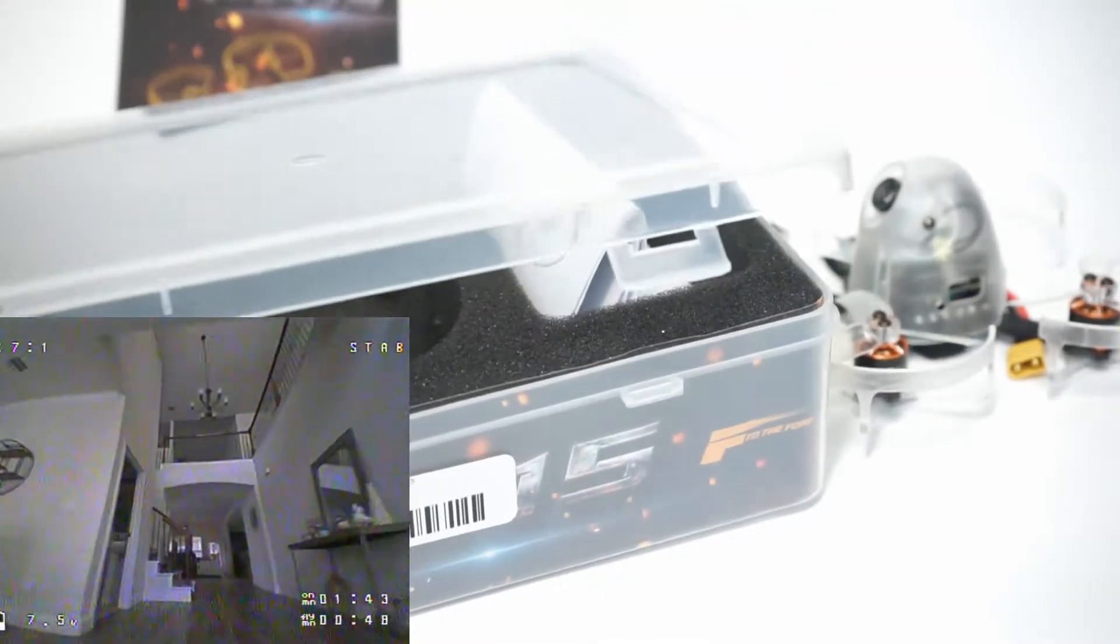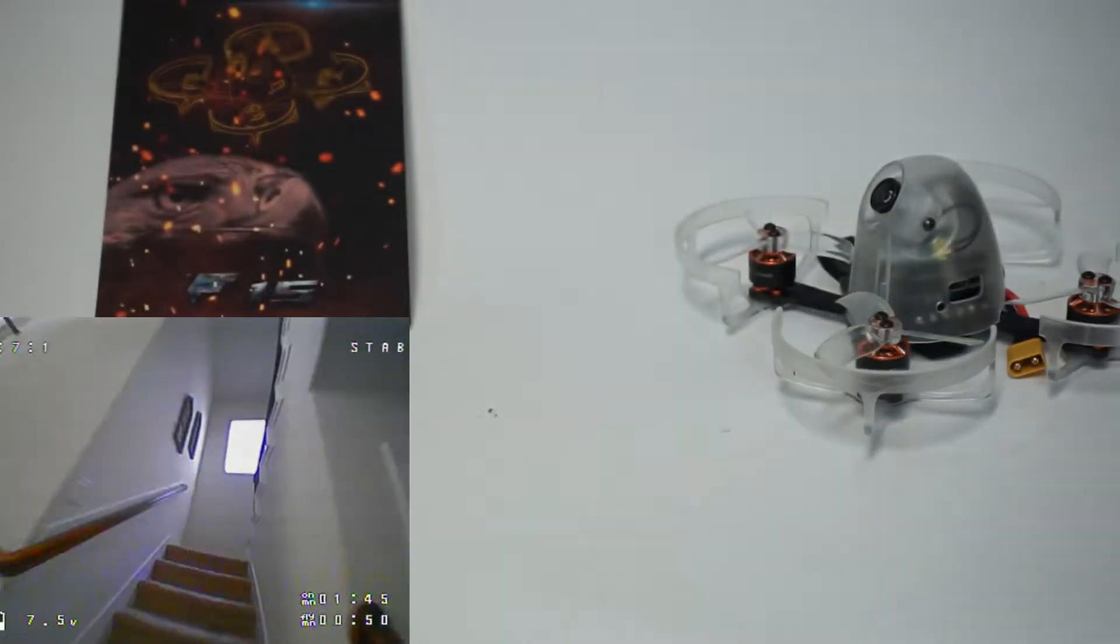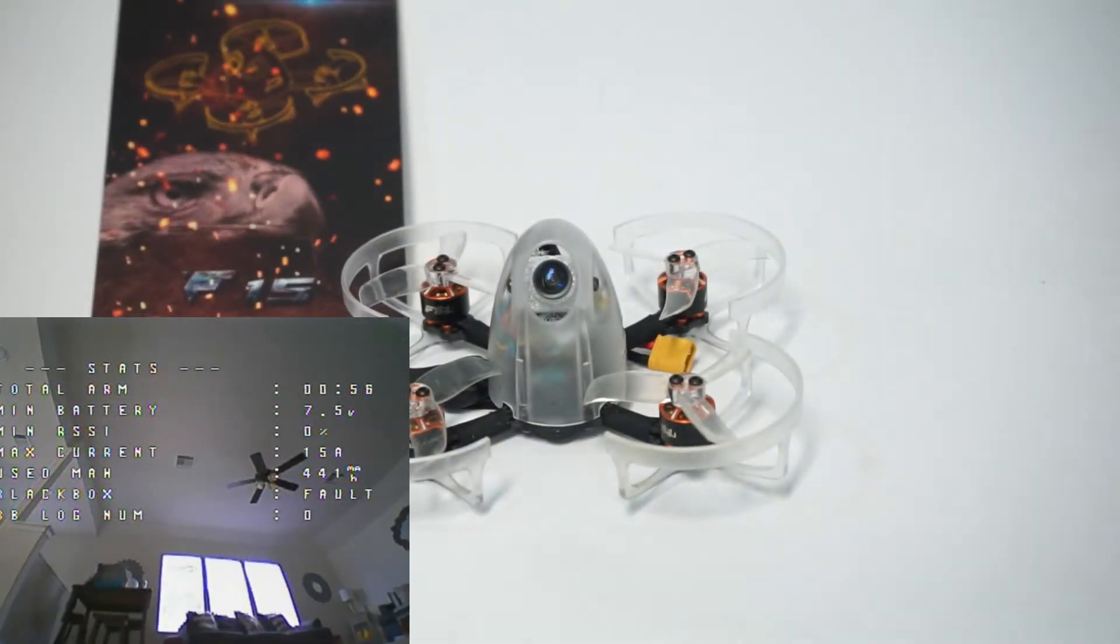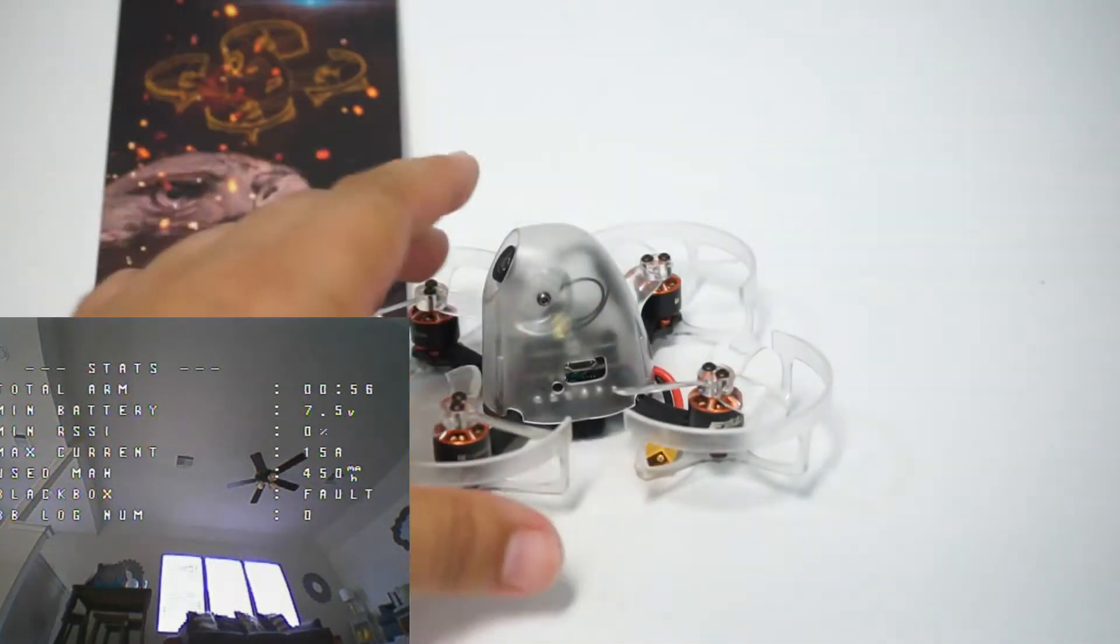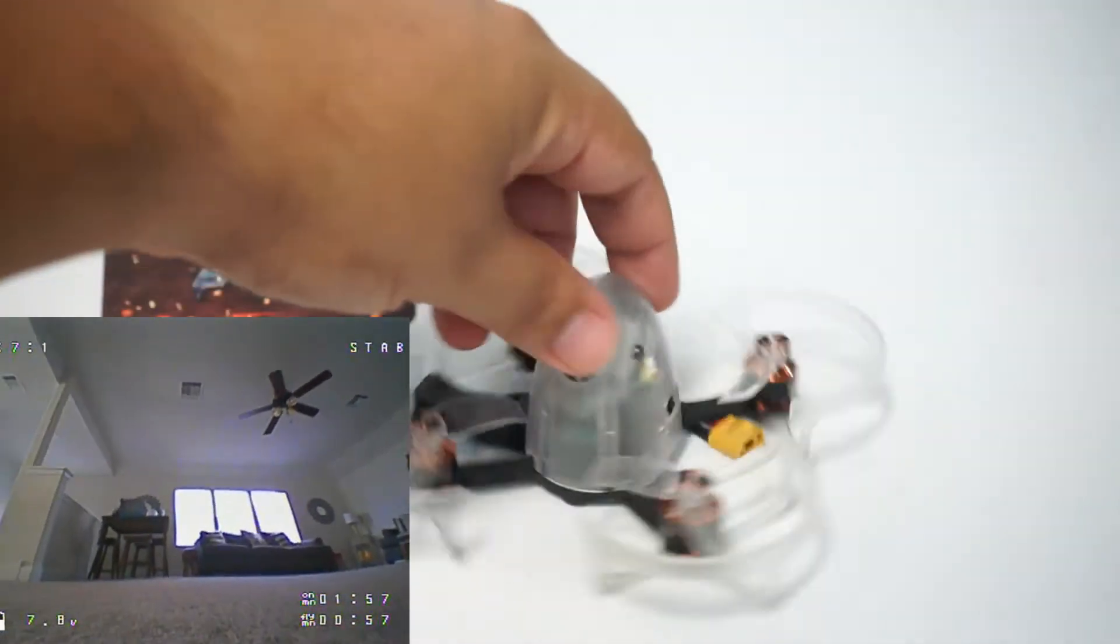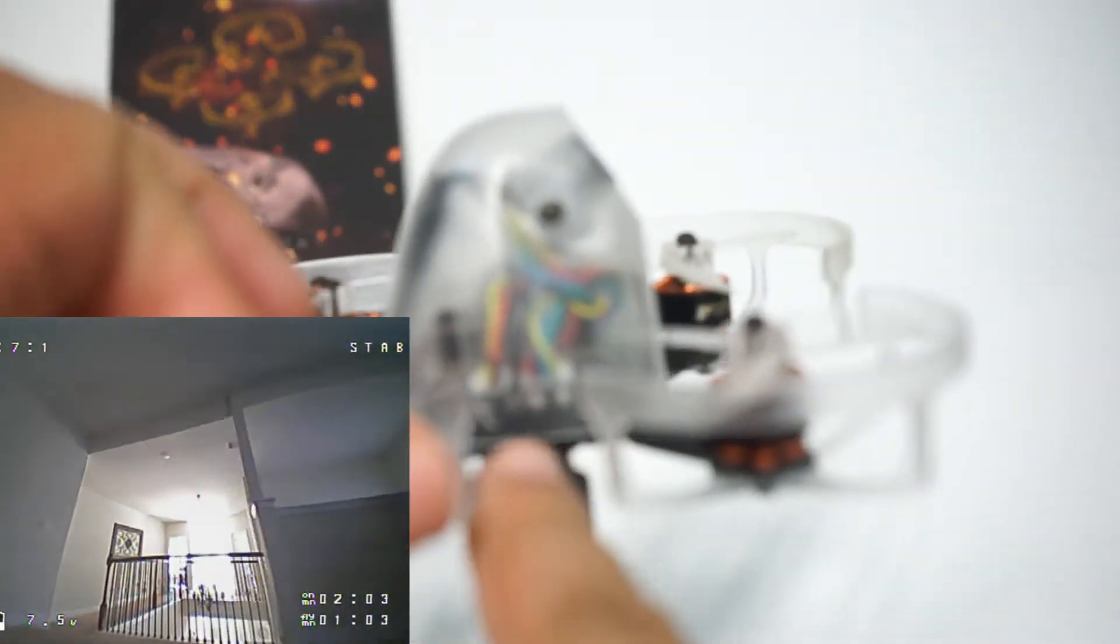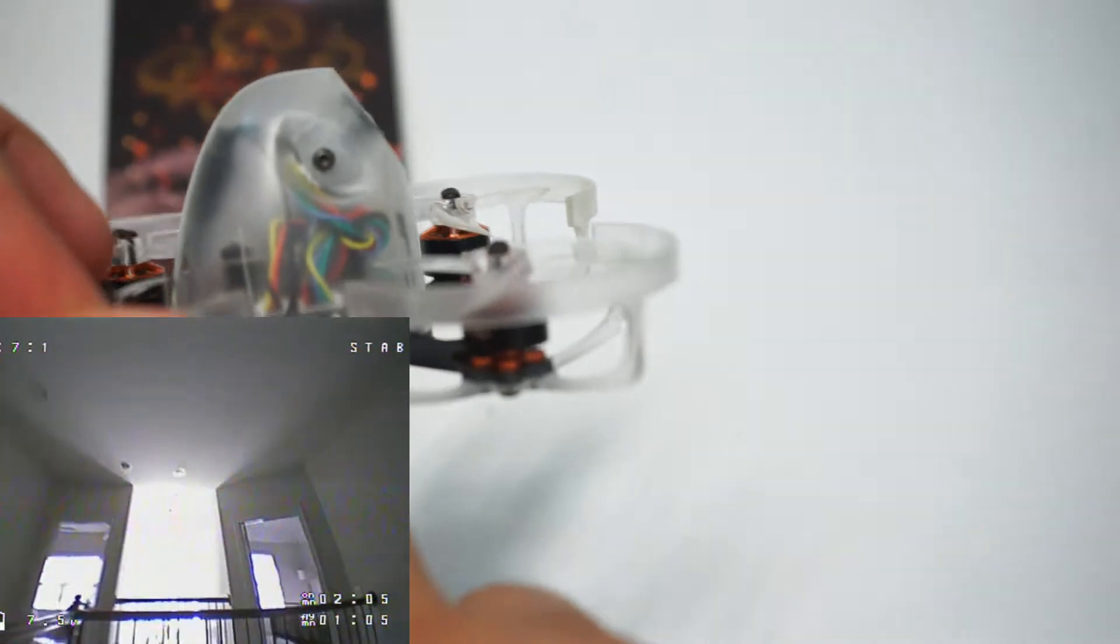Now I don't have this on camera but one thing that I really do appreciate about this quad is that it shipped with a connector with three wires for your receiver and that just plugs in on this side right here. Now if you can see through this clear canopy there are two connectors that are plugged in right there.